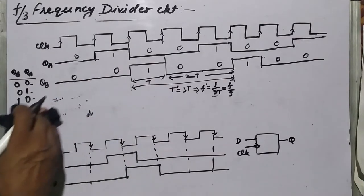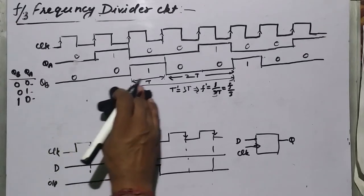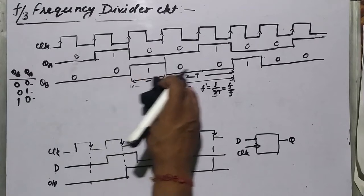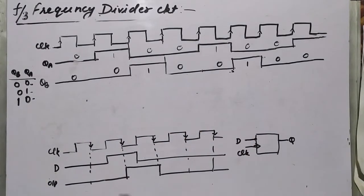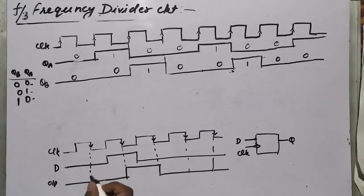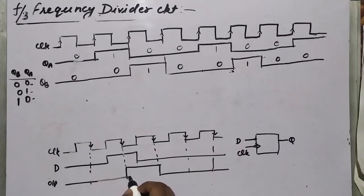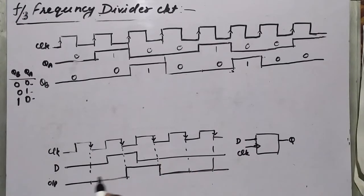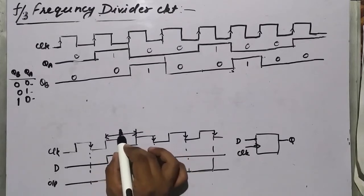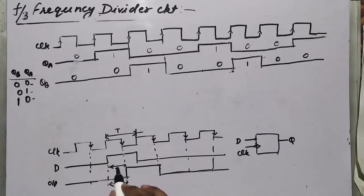We are getting frequency divided by 3, but not a duty cycle of 50%. To fix this, we introduce a negative edge-triggered D flip-flop. If we feed a signal D into this flip-flop with the clock, the output samples D at each negative edge and holds until the next negative edge. The result is that the output is shifted by half a clock cycle relative to D.